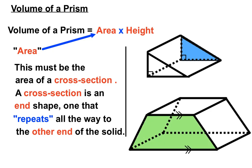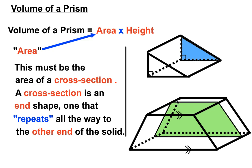Now let's look at the trapezoidal prism. There's a trapezium in green at the front, and as that shape moves through you can see it keeps the same shape right to the other end. In that trapezoidal prism, we'd call the cross-sectional end shape a trapezium. That's important because we need to find the area of that end shape as part of our volume calculations.